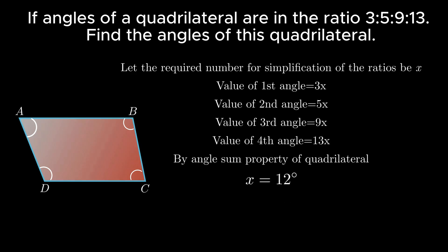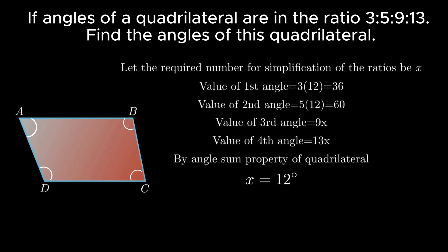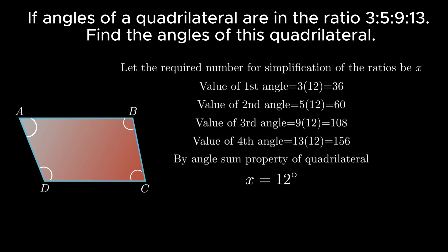Putting the value of x: the first angle equals 3 × 12 = 36 degrees, the second angle equals 5 × 12 = 60 degrees, the third angle equals 9 × 12 = 108 degrees, and the fourth angle equals 13 × 12 = 156 degrees. Hence 36°, 60°, 108° and 156° are the required angles.